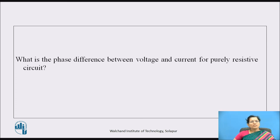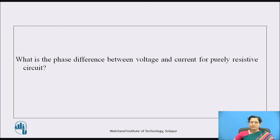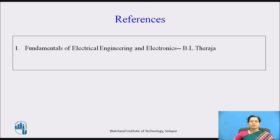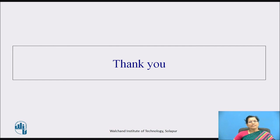Pause the video and think: what is the phase difference between voltage and current for a purely resistive circuit? The answer is: for a purely resistive circuit, the phase difference is zero. You can refer to the book Fundamentals of Electrical Engineering and Electronics by B.L. Thareja. Thank you.